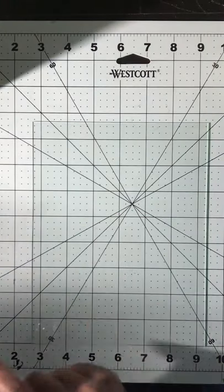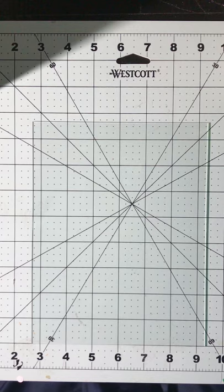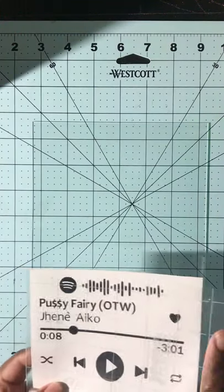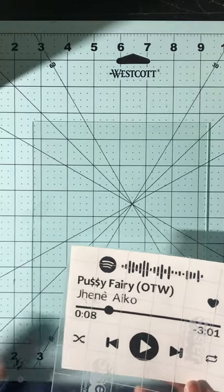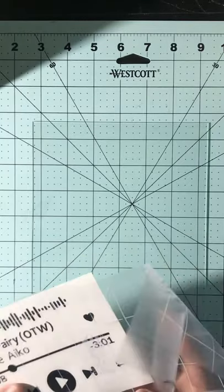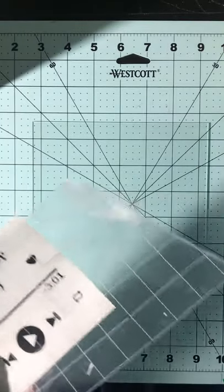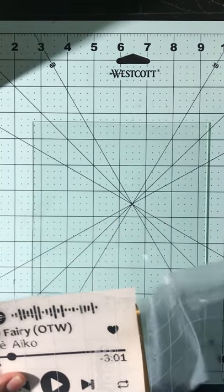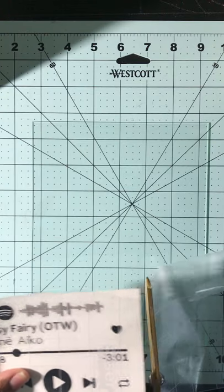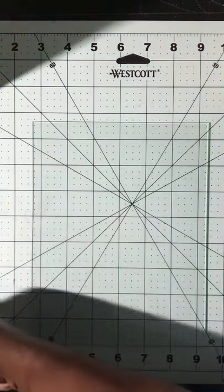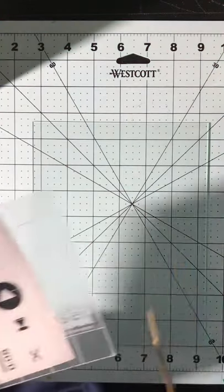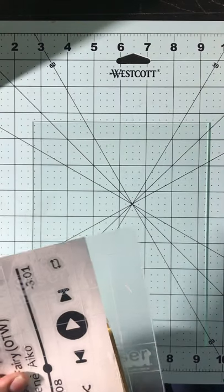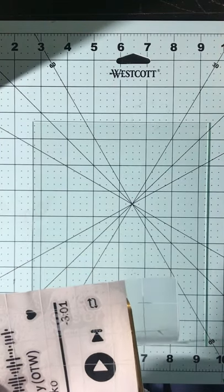This is a 5 by 7 frame that I'm working on. I already got my image cut out and weeded. I have my transfer tape on here that I'm about to cut off so I don't have all the extra excess hanging off the sides. It just makes it easier to apply your image.